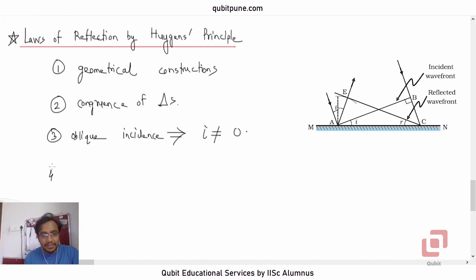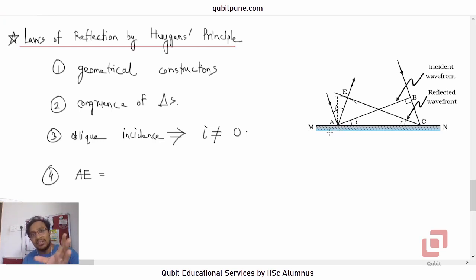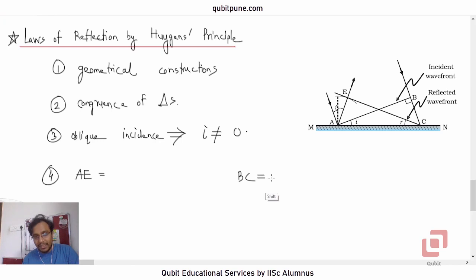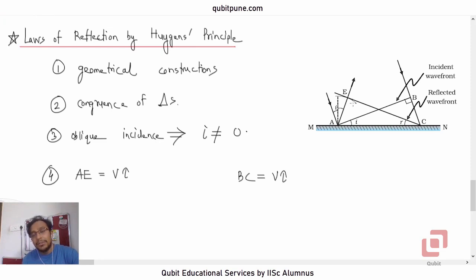AE represents the distance traveled by the secondary wavelet — its radius — after time tau. During this time, point B is reaching point C. So if BC = v·tau, then AE will also equal v·tau. That circular arc with radius v·tau and center A is your reflected wavelet.